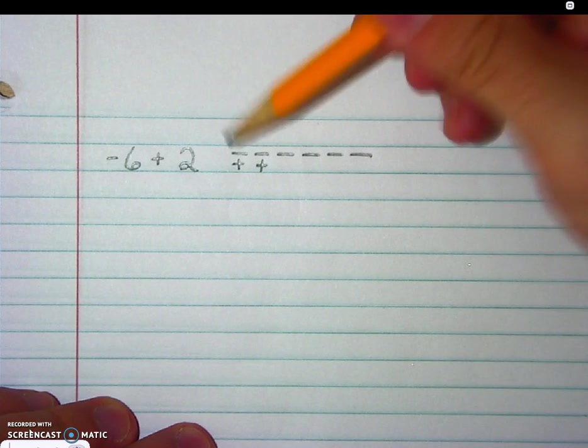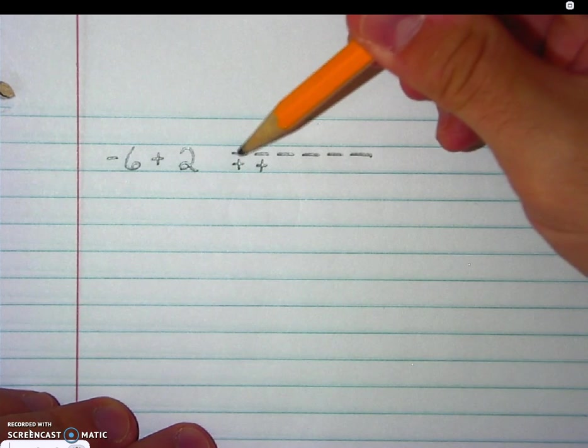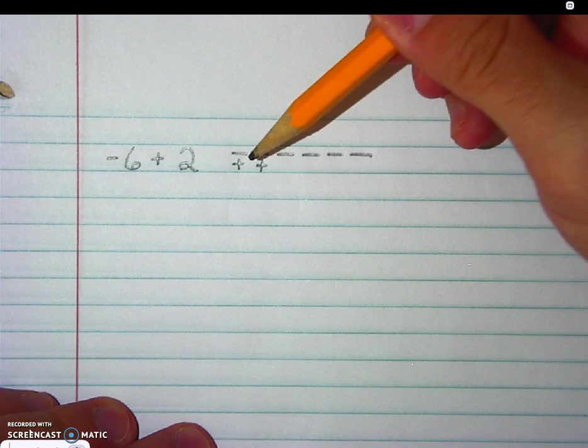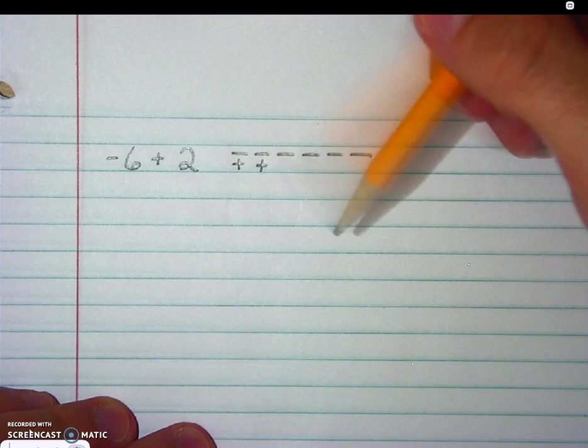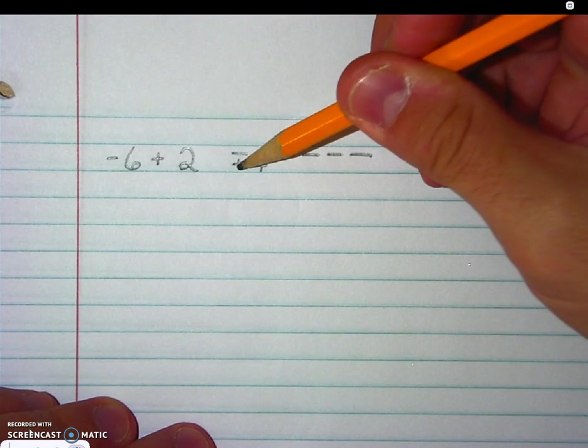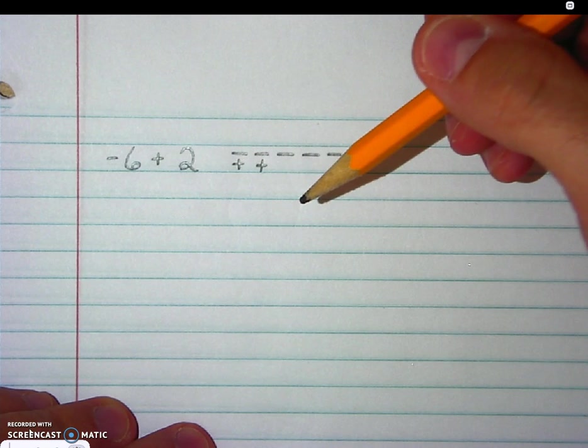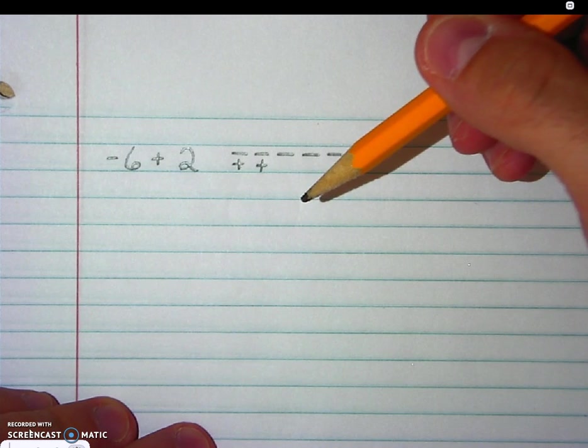Now, this very first negative right here represents negative 1, and this very first positive right here represents positive 1. And in math, a negative 1 and a positive 1 will cancel each other out. This creates what's called a neutral pair, or a zero pair.